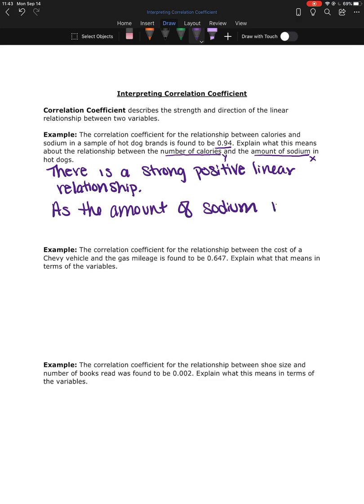So as the amount of sodium increases, the calories increase because it's a positive relationship. If this was a negative relationship, if we had a negative correlation coefficient, then the sodium increasing would cause the calories to decrease.